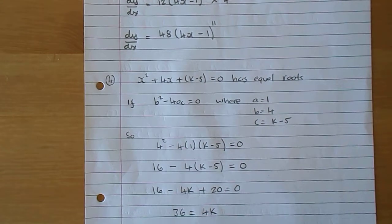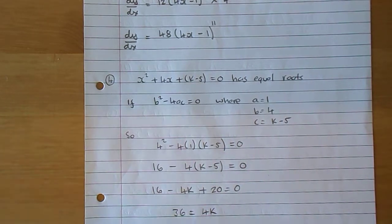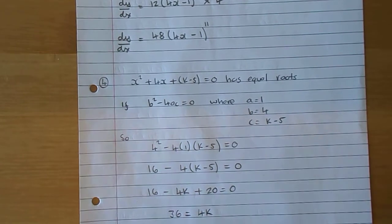Let's move on to question 4. Find the value of k for which the equation x squared plus 4x plus (k - 5) equals 0 has equal roots.